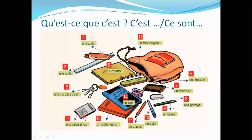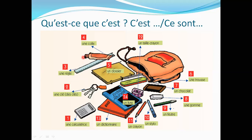For example, number one is 'calculatrice' (calculator). You can point to it and ask 'qu'est-ce que c'est?' Since 'calculatrice' is singular, you answer 'c'est une calculatrice.' You need to include vocabulary by looking at the picture to know the meaning and, by looking at the article, you will know its gender. In singular form use 'c'est un/une,' and in plural use 'ce sont des.' For example: 'ce sont des clés' — these are some keys. Then we have 'une règle,' a ruler or scale.